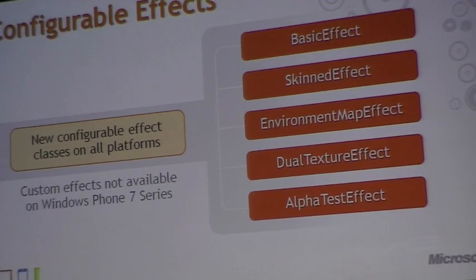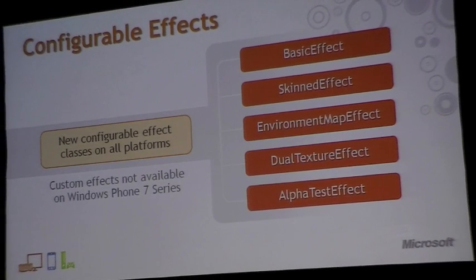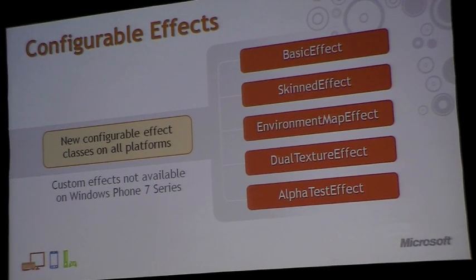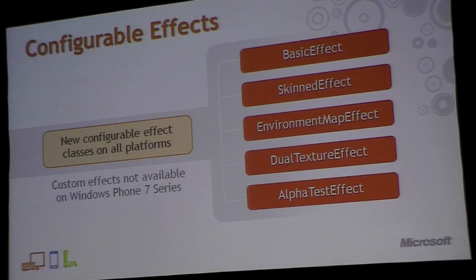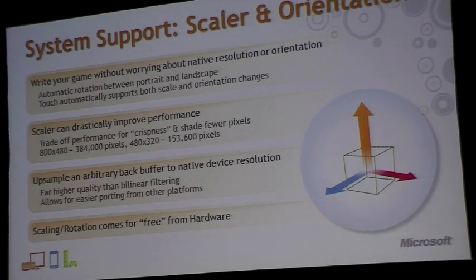One of the things we've provided on Windows Phone 7 Series is this idea of configurable effects. You have different effects to choose from: basic effect, which is kind of a three-point lighting effect; skin effect; environment map; dual textures; alpha textures; and alpha test. Sean's going to go in much deeper into these, but a key takeaway is that custom effects aren't available on Windows Phone 7 Series.